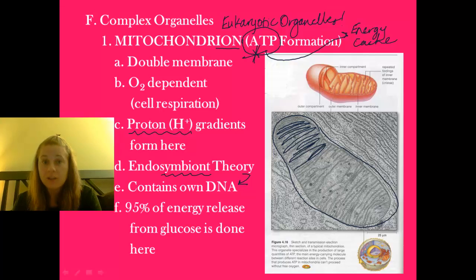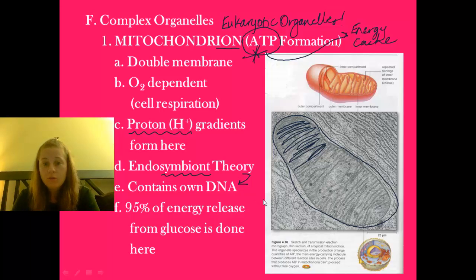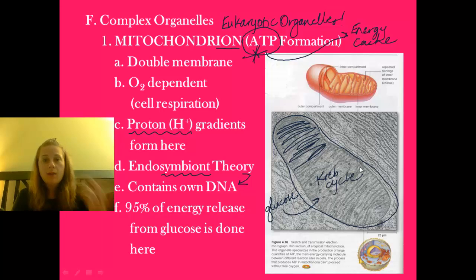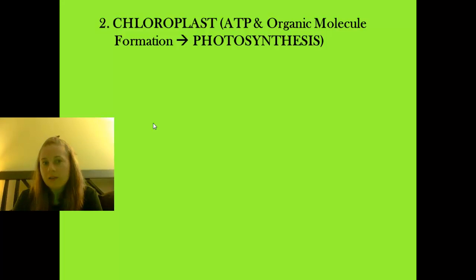The function of mitochondria is really important: 95% of our energy release from glucose happens here. In a quick overview, glucose out in the cytoplasm is broken down, and products of that breakdown head into the mitochondria where we have what we call the Krebs cycle, which helps us produce a large number of ATP molecules using oxygen.